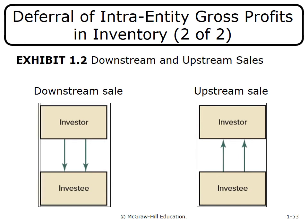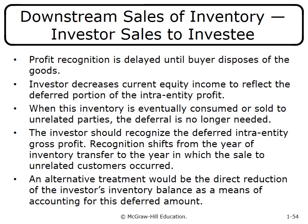In a downstream sale, the investor does not recognize any profit until the investee sells the goods to an outside party. The investor decreases current equity income to defer that profit. When the inventory is eventually consumed or sold to an outside party, the deferral is reversed and the investor then recognizes the deferred intra-entity gross profit.